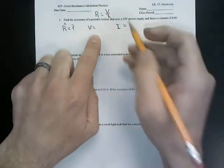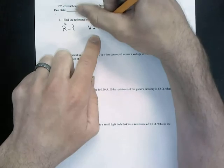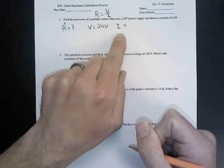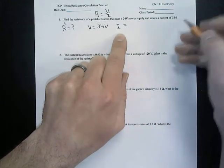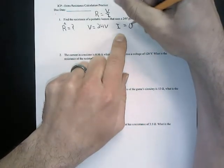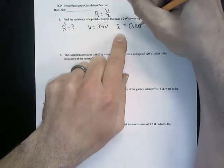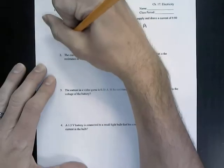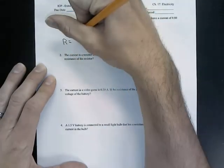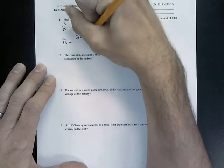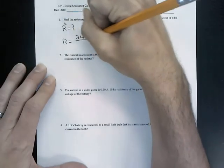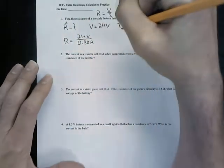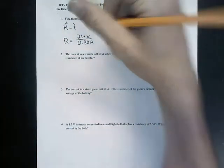Our V for volts is given at 24 volts. And then our I for amps is given at 0.8 amps. So we write down 0.80 amps. Now all we need to do is plug this back into our equation. So R equals 24 volts divided by 0.80 amps.